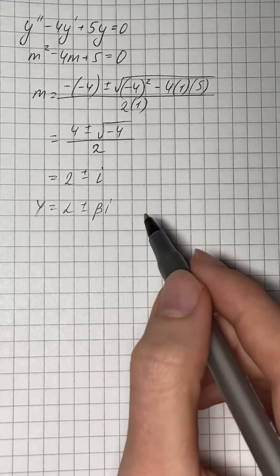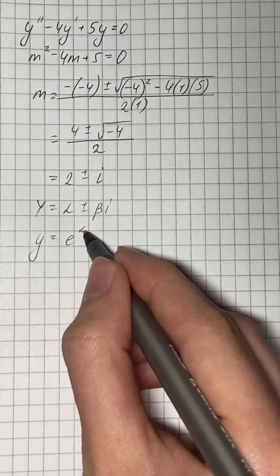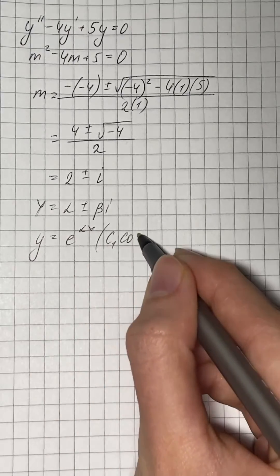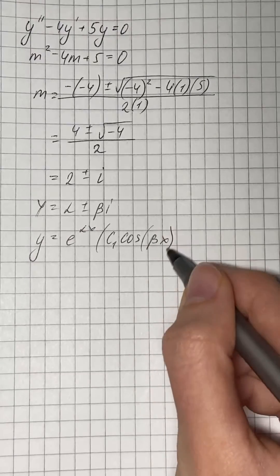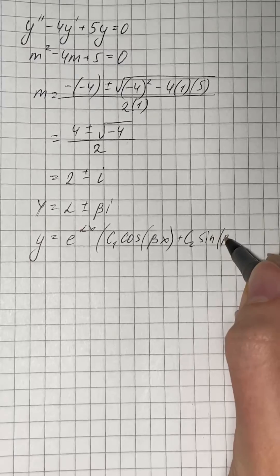The general solution for complex roots is e to the power of alpha x times c sub 1 times cosine of beta x plus c sub 2 times sine of beta x.